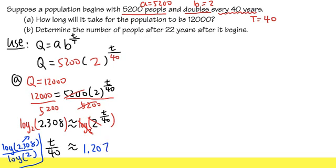Lastly, this is t divided by 40, so we just have to multiply both sides by 40, so that this and that will cancel. Then we see that t is approximately equal to this times 40. So 1.207 times 40, we end up with 48.28. And this is about how long it takes. So I will just put 48.28 years.